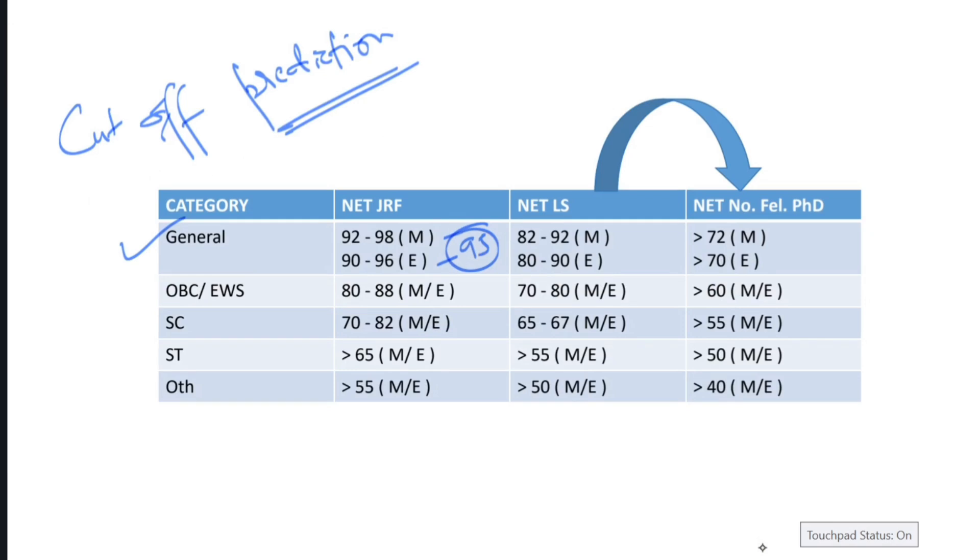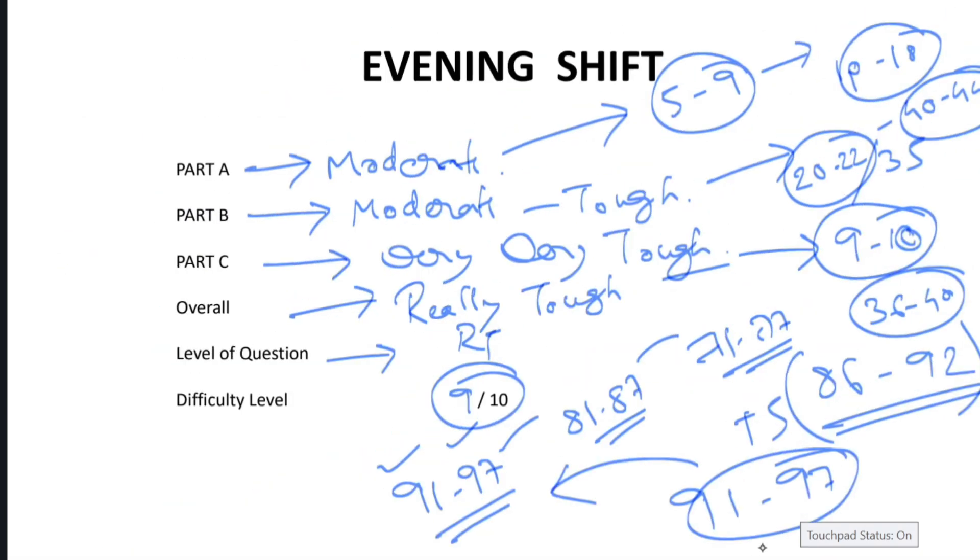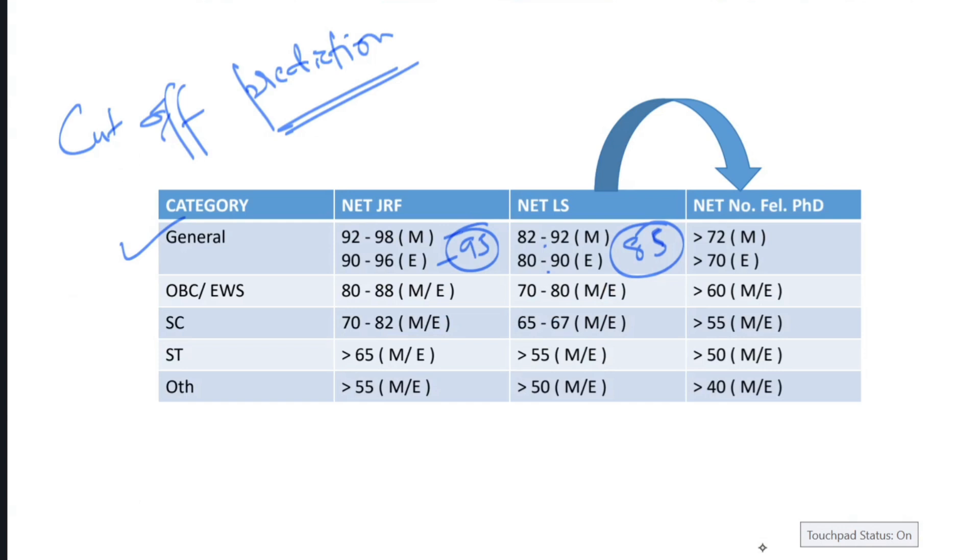This is the JRF value because if you look at the last time, the first exam, the JRF was 101. That was tough, but this was a very tough question. So at 95, there is JRF for both shifts. For NET LS, the same thing would be applied: 82 to 92 and 80 to 90. I think this is going to be around 85, it can even go below 85. For NET no fellowship PhD or no central fellowship, this can be greater than 70. If you're getting greater than 70 for general category, you might be getting the NET qualification at least for this time.